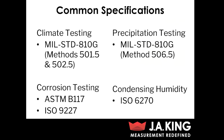I just want to touch on a few common specifications you may run into for environmental testing. For climate testing, a good go-to is MIL-STD-810G, methods 501.5 and 502.5, which also provide some guidelines for climate testing. For corrosion testing, the most common specifications by far are for salt spray, and they are ASTM B117 and ISO 9227. For precipitation testing, a good go-to is MIL-STD-810G method 506.5. And then for condensing humidity, we've got ISO 6270.